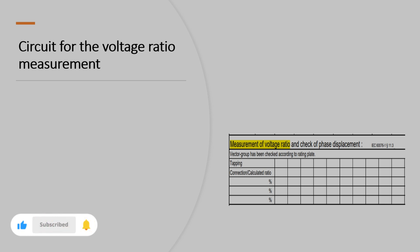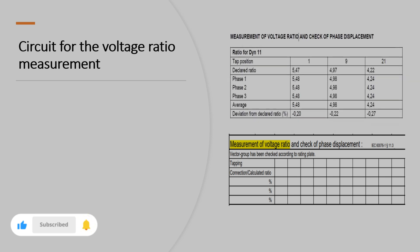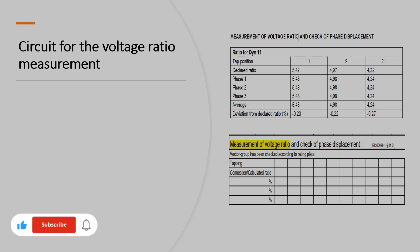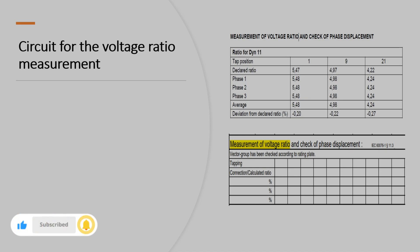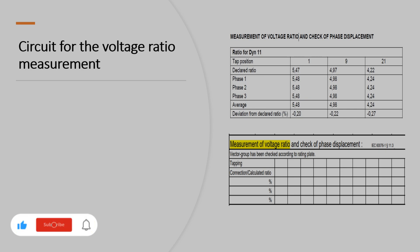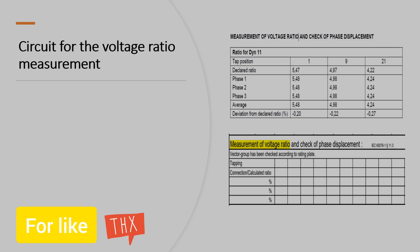We are using the IEC standard. For measuring voltage ratio and checking phase displacement — this is the ratio for dyn11, which is our vector group, at the top position. The declared ratio is shown here: tap positions 1, 9, and 21, as seen in the previous slide. The declared ratio is broken down by phase one, phase two, phase three, and then average and deviations of the declared ratio.